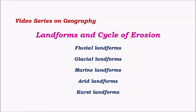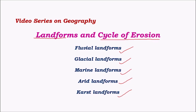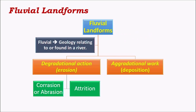Hello friends, welcome to this video series on geography. In this video, I'll be explaining about landforms associated with the cycle of erosion — landforms caused mainly due to the cycle of erosion. These include fluvial landforms, glacial landforms, marine landforms, arid landforms, and karst landforms. Karst landforms are formed due to accumulation of limestone sediments.